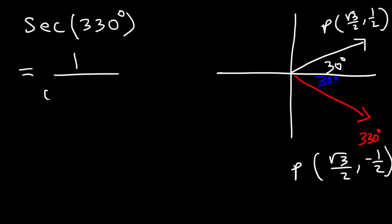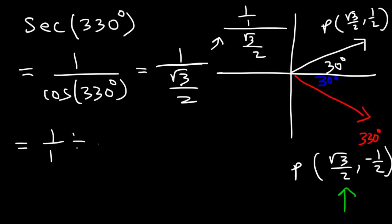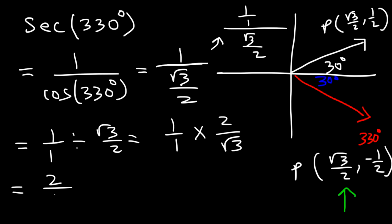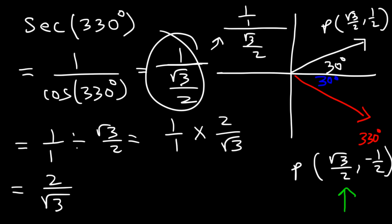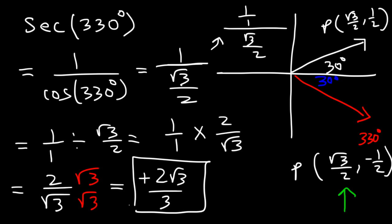Now let's use the reciprocal identity. Secant is 1 over cosine, so we need to find cosine(330). Cosine 330 is the x value, which is √3/2. So we have 1 divided by (√3/2). Using the keep-change-flip principle — keep the first fraction, change division to multiplication, flip the second fraction — this becomes 2/√3. After rationalizing, the final answer is positive 2√3/3. So that's secant of 330 degrees.